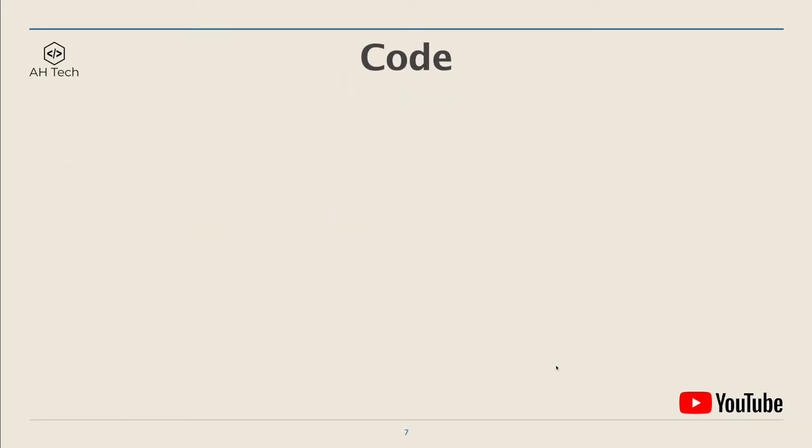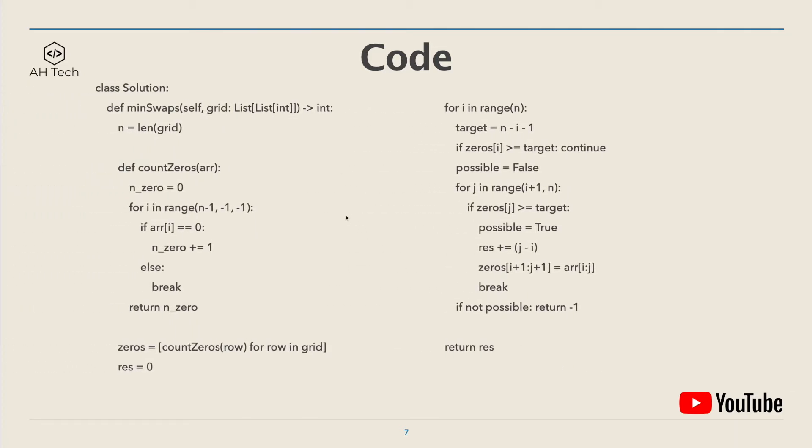Now let's see the code in action. The left part of the code is pretty self-explanatory. First, get the dimension of the grid. And then we define a count zero function to generate the trailing zeros array of this grid. And then we run the function to generate the trailing zeros array. The right part is to do the searching and swapping on the zeros array. This is more tricky, so let's focus on this part.